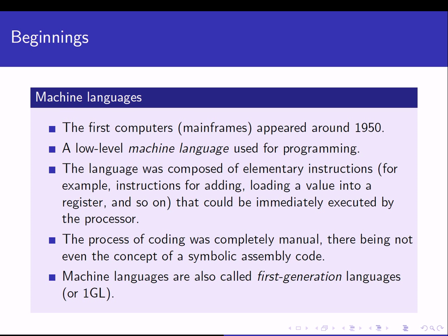This language was composed of elementary instructions — for example, instructions for adding, for loading a value into a register, and so on. The process of coding was completely manual. There were no compilers, no integrated environments, and the programmer had to write code in machine language. Today we use compilers to compile high-level language into machine language. Machine languages are called the first generation languages.